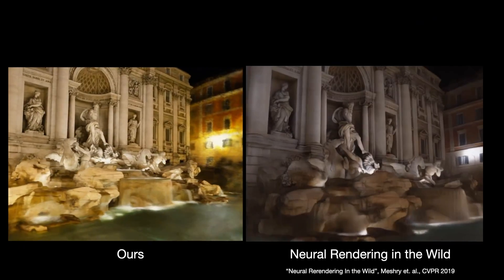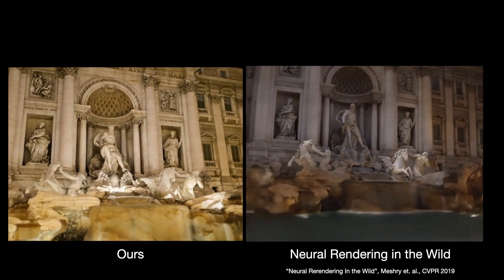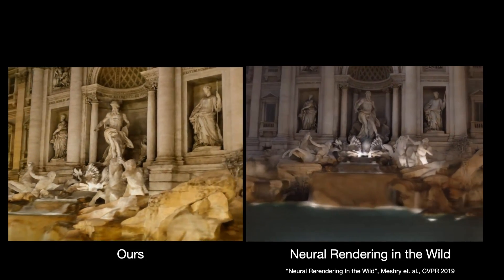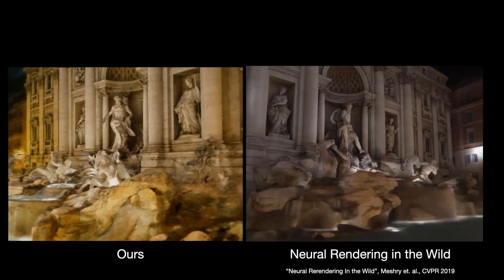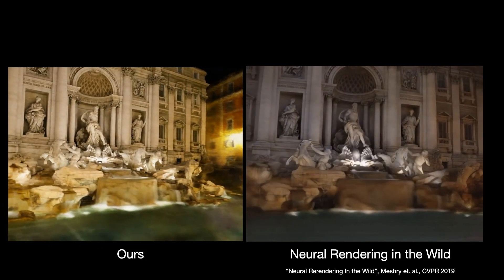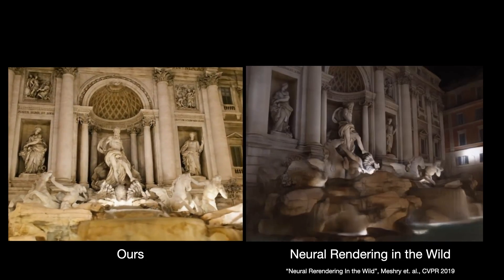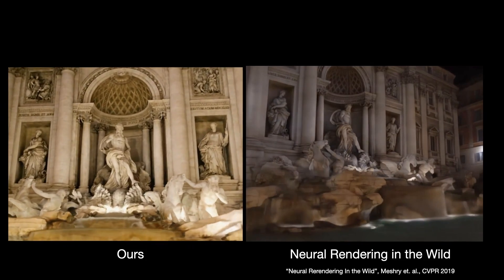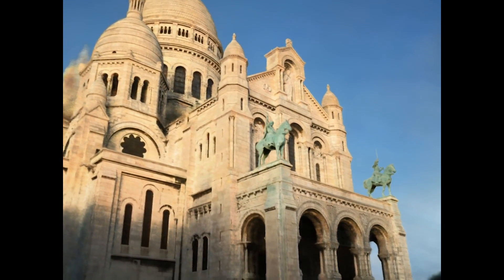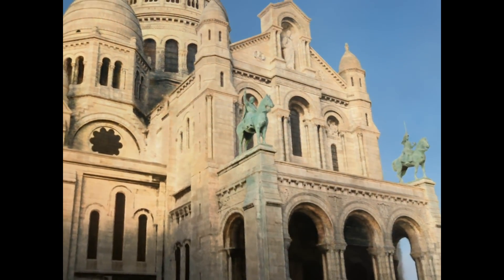Here we're comparing to neural re-rendering in the wild from CVPR last year, and we see that our model does a better job of disentangling 3D structure from lighting effects, and stabilizing things temporally, and just generally produces higher-quality renderings. Here's another result from our technique where we're just rendering the static model while moving the camera.